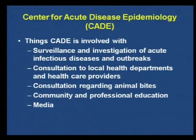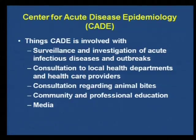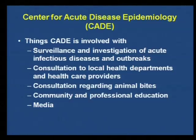To give you some background, I work with CAID, the Center for Acute Disease Epidemiology. We handle infectious diseases other than STDs and tuberculosis. All those diseases on the reportable disease list — most of those come through us. We perform surveillance and investigation of acute infectious diseases and outbreaks, and we provide consultation to local health departments and healthcare providers. We also provide consultation regarding animal bites — that's 24-7. We get a lot of rabies questions; that's probably our most common phone call, especially after hours.